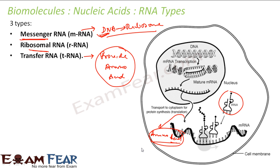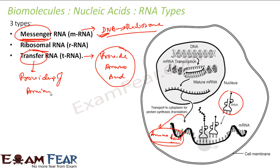Ribosomal RNA is the central component of ribosomes, which are nothing but protein manufacturing machines — they create proteins. To summarize: messenger RNA takes the DNA sequence and converts it into an amino acid sequence for the ribosome; transfer RNA recognizes the amino acid sequence and provides amino acids; ribosomal RNA is the central component of ribosomes used to create proteins.